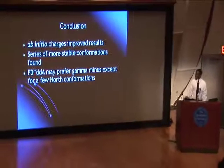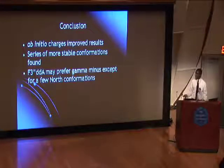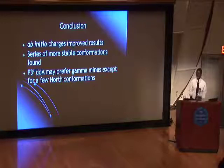In conclusion, we see that using the ab initio charges actually improved our results and made them more accurate, and we were able to find a more stable series of conformations. F3 double-prime DDA may have a preference for gamma minus, which is negative 60 degrees, except for the few north conformations — those were the conformations at the very beginning and end of our graph.